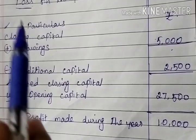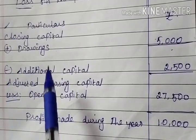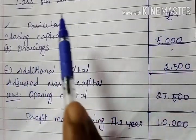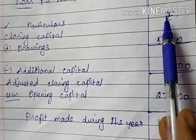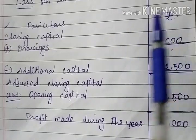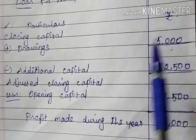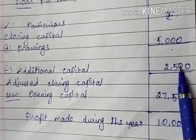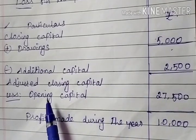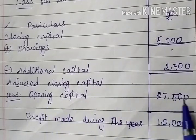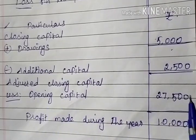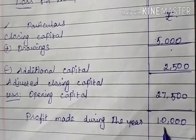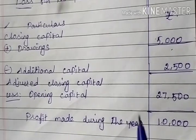First, write the format and enter the given information. Closing capital is missing. Drawings amount: 5,000. Additional capital: 2,500. Opening capital: 27,500. Profit: 10,000. This is the question.